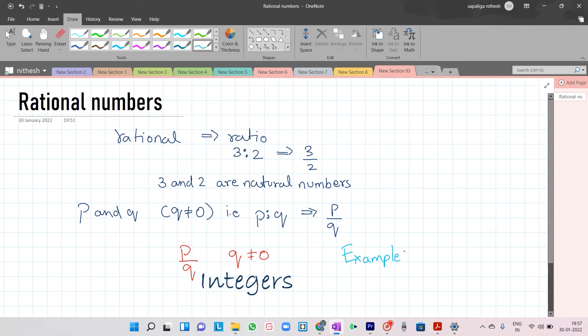Thus, 4 upon 5 is a rational number. Here, p is equal to 4 and q is equal to 5.